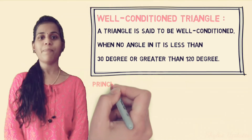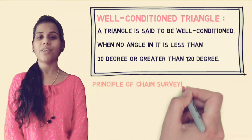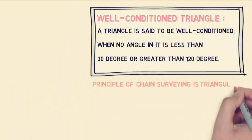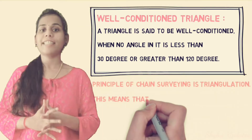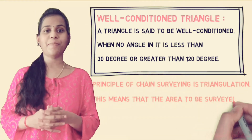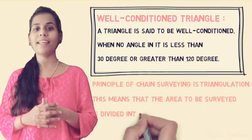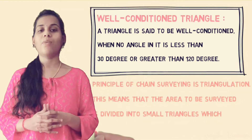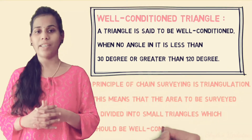The principle of chain surveying is triangulation. This means that the area to be surveyed is divided into small triangles, which should be Well-Conditioned.